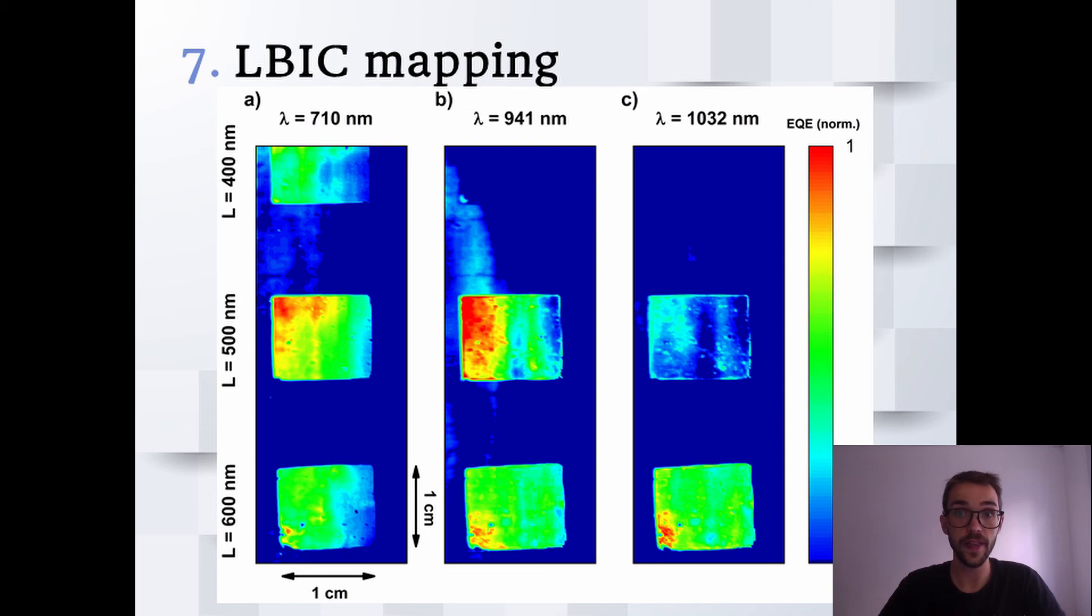We can see that for visible wavelengths, all three photonic crystals perform better than the surrounding flat area. But whenever we start going into the near infrared, the 400 nanometer one stops having an enhanced signal, and when we go even deeper, the only one that exhibits a significant signal is the 600 nanometer one. This could be used as an all-in-one substrate spectrometer without the need of any extra prism or grating, for example, among many other possible uses.